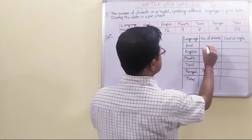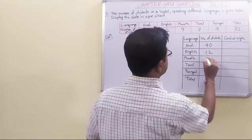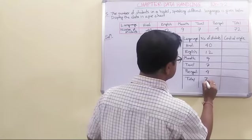Then the number of students who speak in Hindi are 40. This is 12, 9, 7, 4, and the total is 72.